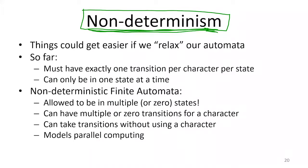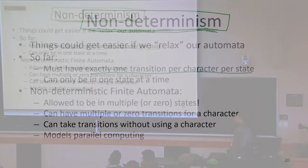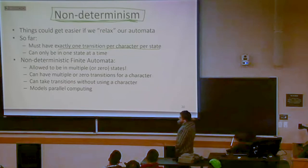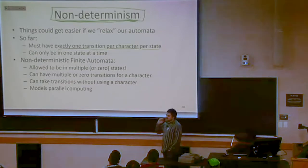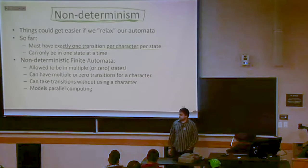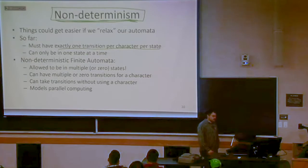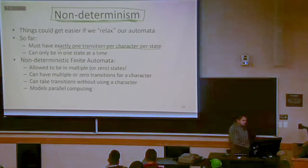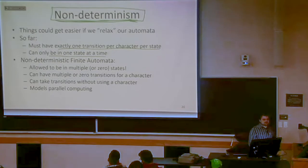So far with our automata, we can have exactly one transition per character per state. Our rule with our finite state automata so far has been every state must have exactly one outgoing transition per character, and we're only ever allowed to be in one state at a time.